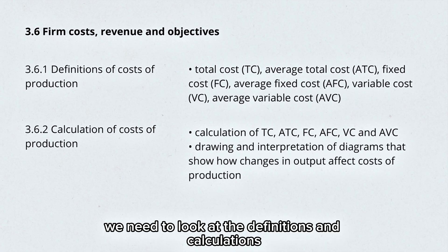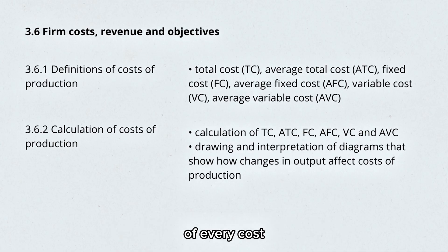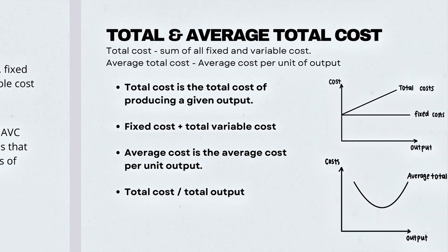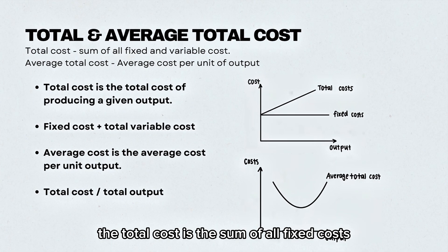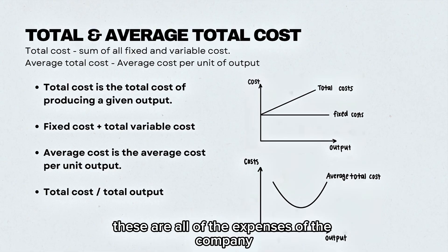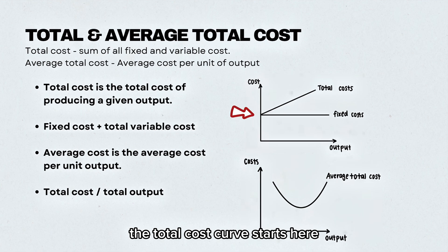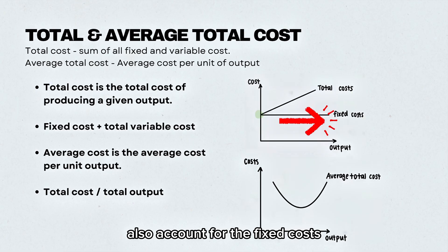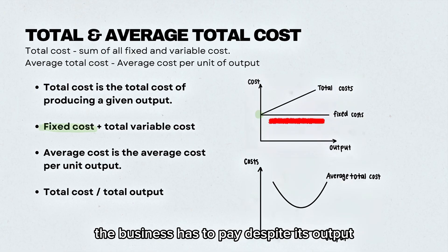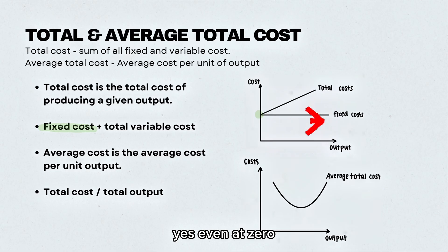Firstly, we need to look at the definitions and calculations of every cost. The total cost is the sum of all fixed costs and variable costs — these are all of the expenses of the company, represented in this line here. The total cost curve starts here because the total costs also account for the fixed costs the business has to pay despite its output, even at zero.